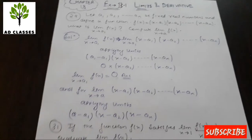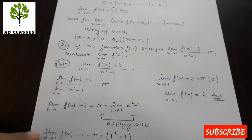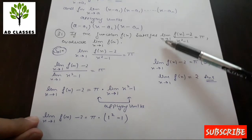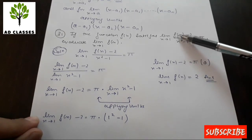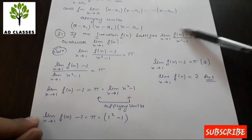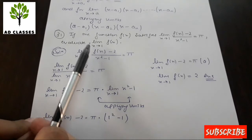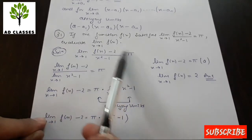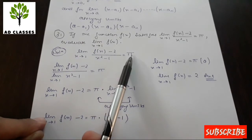For the next part of Question 29: if the function satisfies the condition that the limit as x tends to 1 of [f(x) - 2] / (x² - 1) equals π, we need to find the value of f(1). The given condition is: limit x tends to 1 of [f(x) - 2] / (x² - 1) = π.